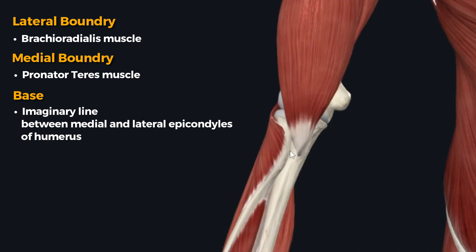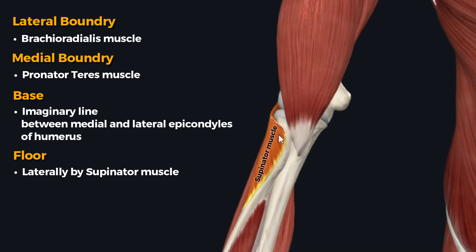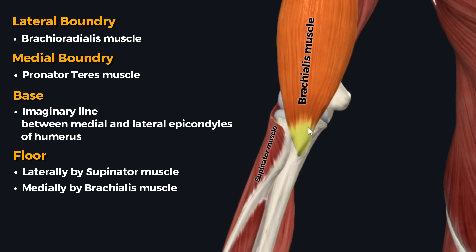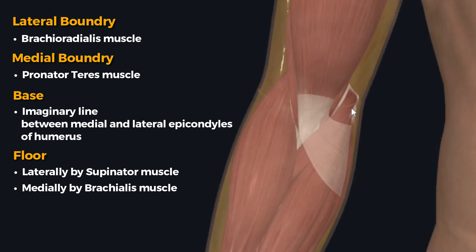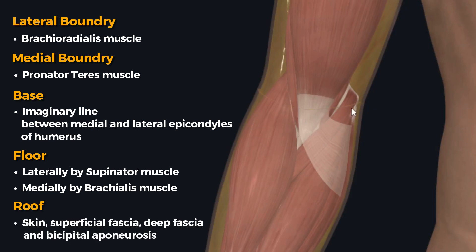The floor of this triangular depression is formed laterally by the supinator muscle, while medially the floor is formed by the brachialis muscle. The roof of the cubital fossa is formed by the skin, superficial fascia, deep fascia, and bicipital aponeurosis.